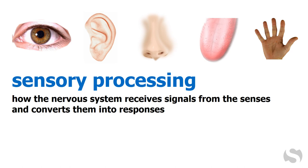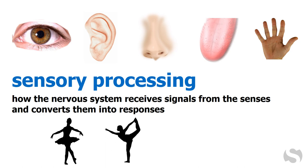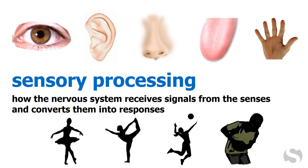The senses include the five that are commonly known. Less well-known but still extremely important are proprioception, which is the perception of body position; vestibular, which maintains balance and body posture; kinesthesia, which perceives the body's movement through space; and interoception, the sense related to what's going on inside the body, including hunger, satiation, thirst, and temperature.